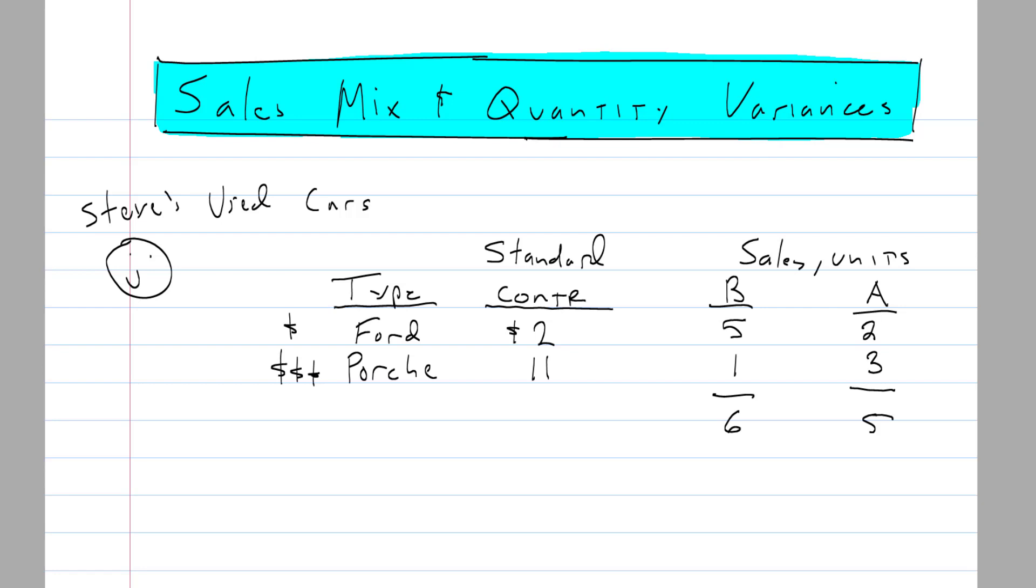Now that we have these basic numbers in front of us, we can conceptualize what these variances are all about. The sales quantity is simply about the total number of units sold, ignoring the mix or the ratio. Our budget was six units. Our actual was five units. We sold fewer units than planned. Sales quantity is adverse. That's the easy one.